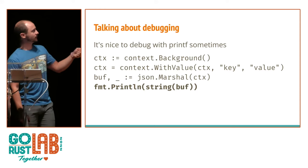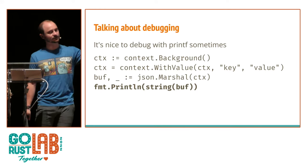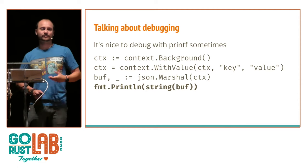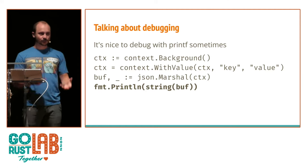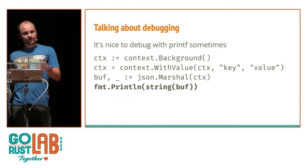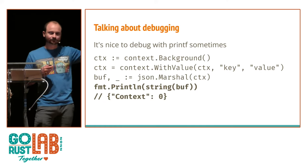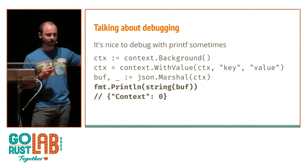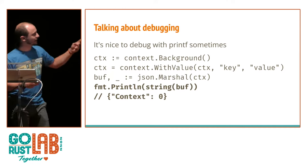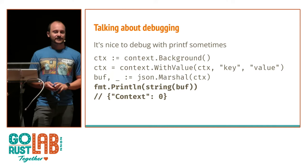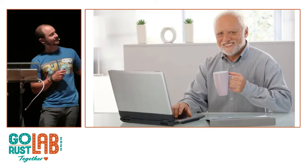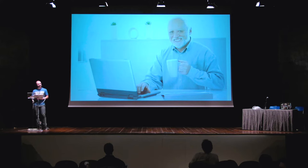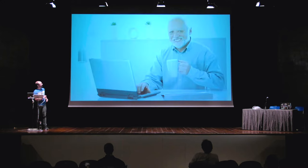Some of you might think this prints nothing, because context is not inspectable. But the JSON package has a tendency of inspecting inside an interface to see what the actual concrete type is. Some might think those keys and values are probably not exported, and the JSON package only prints exported fields. But I'm pretty sure none of you expected these to be printed out. Why does it tell me it's a context? Usually JSON doesn't print a type. And why zero?